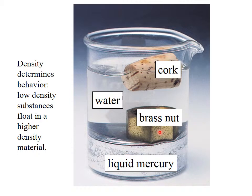The brass nut here has a density that is between that of water and liquid mercury. So the brass nut is floating on the mercury but sinking in the water.